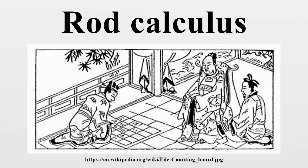Rod numerals is the only numeric system that uses different placement combinations of a single symbol to convey any number or fraction in the decimal system. For numbers in the units place, every vertical rod represents 1, two vertical rods represent 2, and so on until 5 vertical rods represent 5. For numbers between 6 and 9, a biquinary system is used, in which a horizontal bar on top of the vertical bars represents 5. The first row shows numbers 1 to 9 in rod numerals, and the second row shows the same numbers in horizontal form.